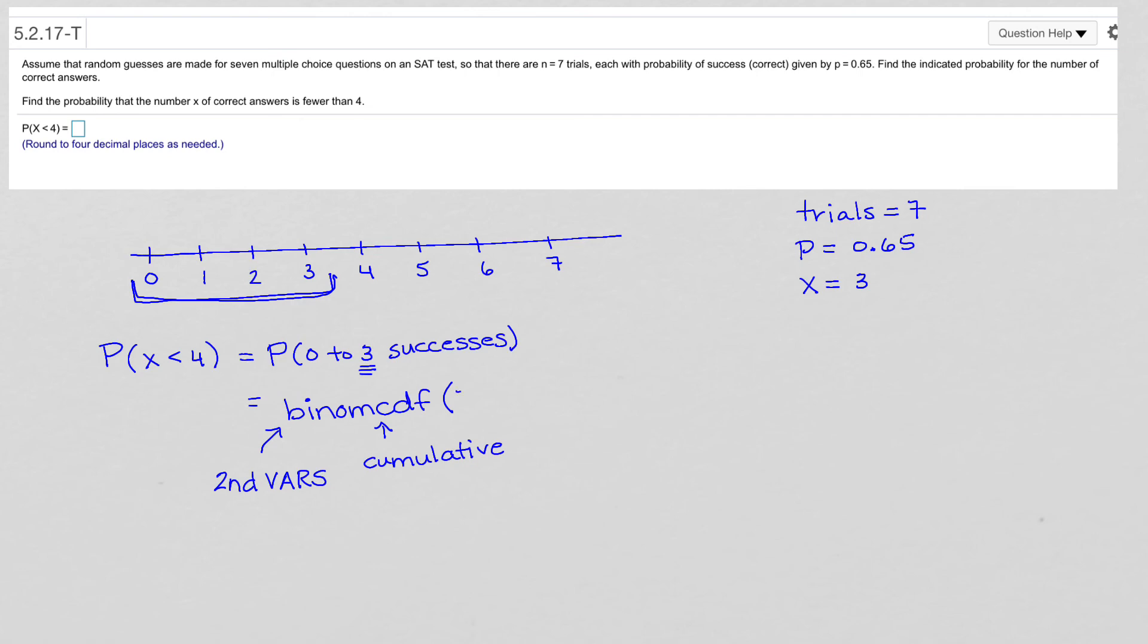So in your calculator, it will come out as seven. When you press calculate, it will be seven, comma, 0.65, comma, three. If you don't have the wizard, then you're going to type it in just like this.